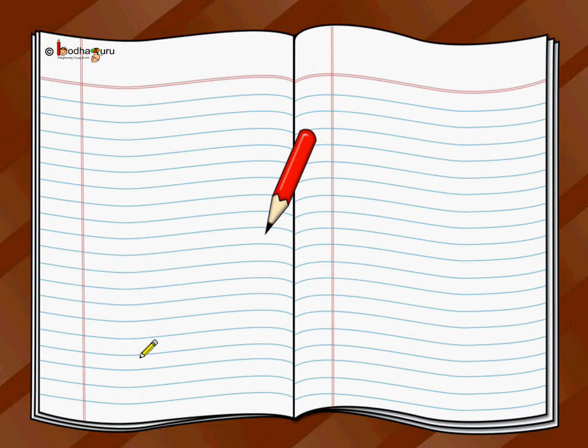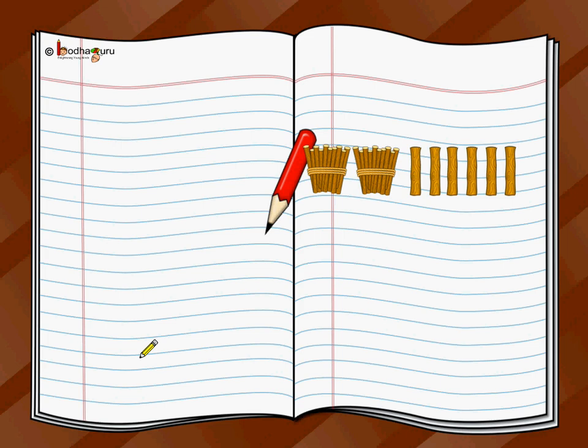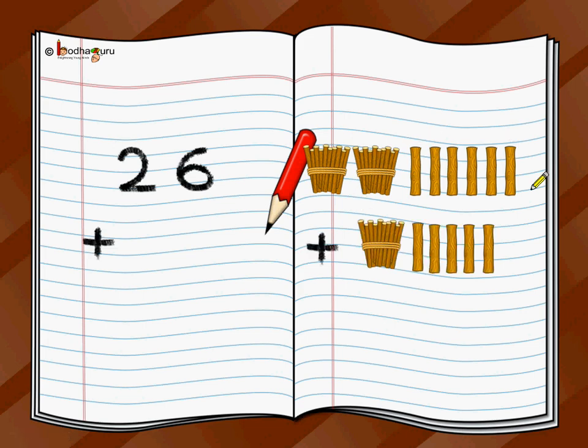Sounds confusing? Let us take another example. Let us say we have 10, 20, 21, 22, 23, 24, 25, 26. We have 26 sticks and we got 10, 11, 12, 13, 14, 15. We got 15 more sticks. How do we count?